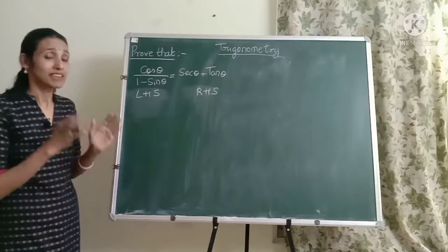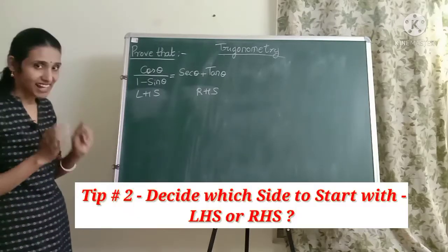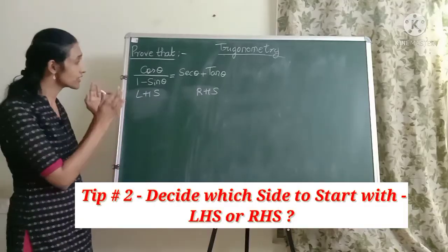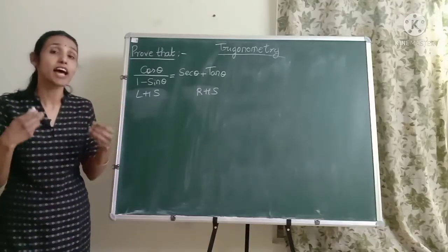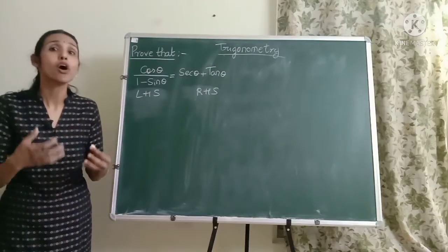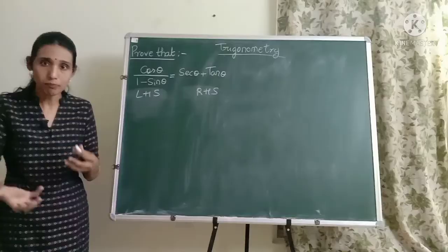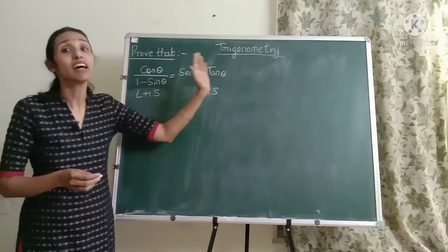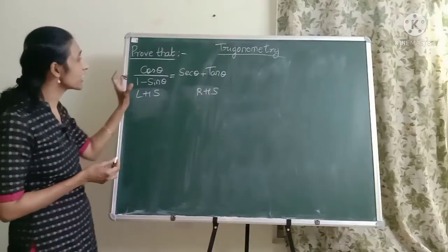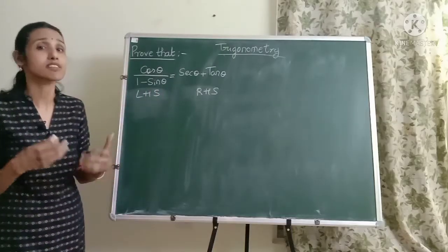Once you have done that the second tip is to decide which side to start with. So the general rule is to start with a side which has more terms and more operators in it. Because that way you will have more scope of modification, of simplification and of getting the other side. Now coming back to our question, which side do you think has more operators and more terms?